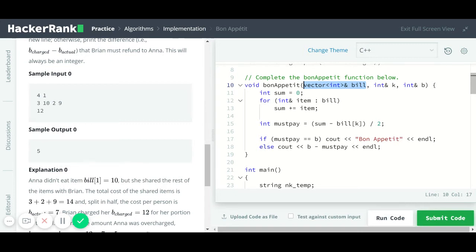And then we have an integer variable called k, also by reference. And k corresponds to the index of the item on the bill that Anna does not eat. And then b is the amount that Anna is asked to pay by Brian.